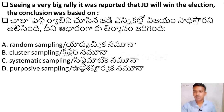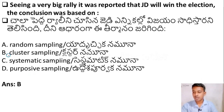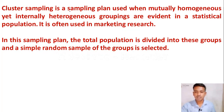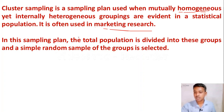The next question: seeing a very big rally, it was reported that JD will win the election. The conclusion was based on — Option A: Random sampling, Option B: Cluster sampling, Option C: Systematic sampling, Option D: Purposive sampling. The right answer is Option B — Cluster sampling. Cluster sampling is used for mutually homogeneous populations, yet internally heterogeneous groupings are evident. It is often used in marketing research. In cluster sampling, the total population is divided into subgroups and a group is selected by simple random sampling.